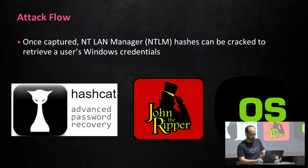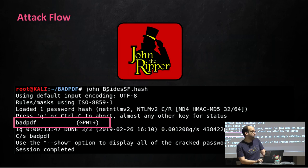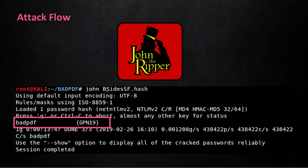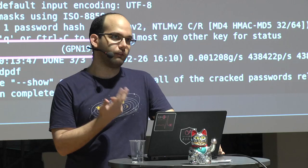In this example we've opted to use John the Ripper, which comes pre-installed in Kali Linux — very simple to use, the only argument was the file containing the captured hash. As you can see, cracking the NTLM hash of user GPN19 gave us their password: badpdf. The total cracking time in this example was roughly 13 minutes. The time required to crack the password will vary with both the complexity of the password and the strength of the machine running the cracking process.